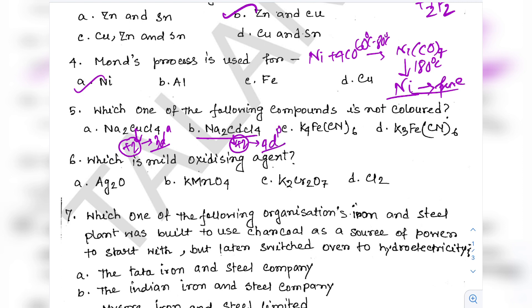Question 18 — the last question: Find the incorrect statement about interstitial compounds. Option A: they are chemically inert — correct. Option B: they are non-stoichiometric and neither typically ionic nor covalent — correct. Option C: they have low melting points compared to the parent metal — incorrect. They actually have higher melting points than pure metals because metal–nonmetal bonds are stronger than metal–metal bonds, due to the polarity generated. So option C is incorrect.